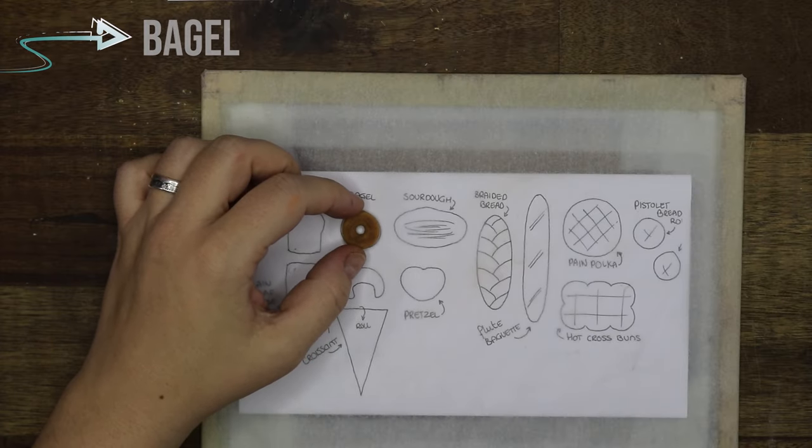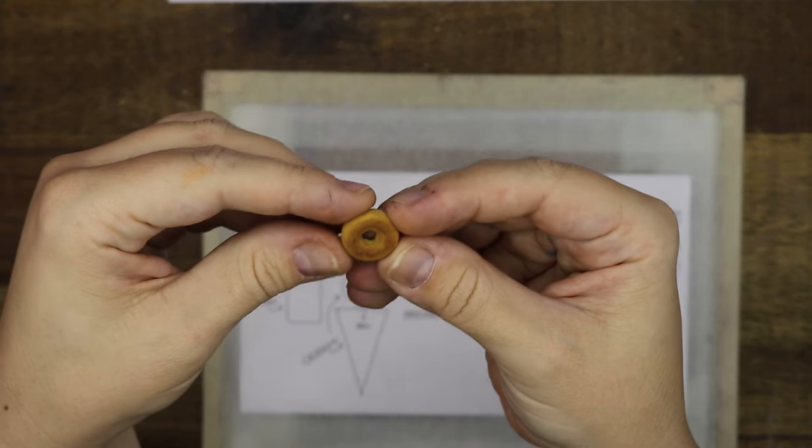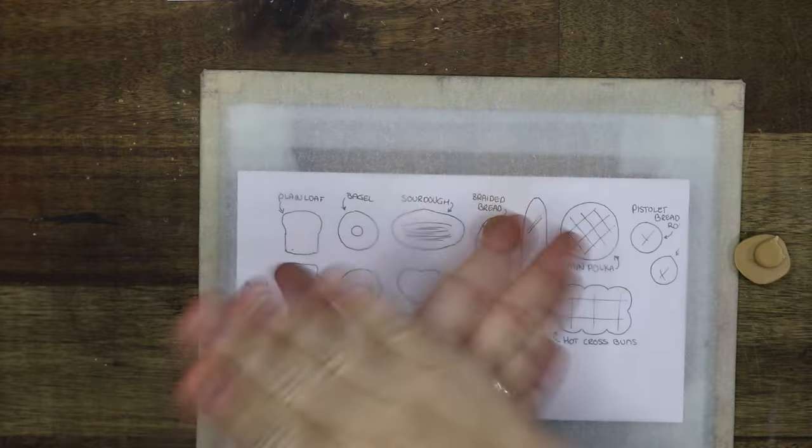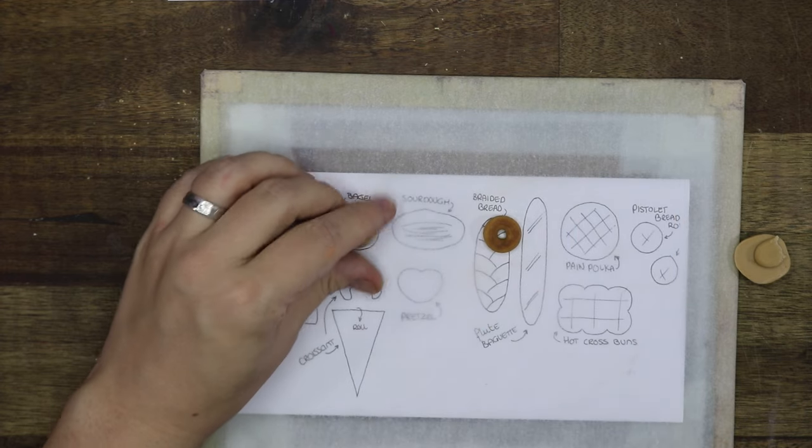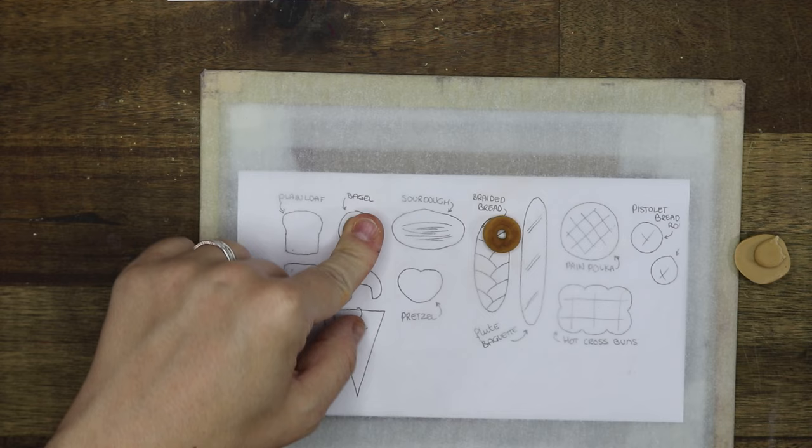Next we're going to be making a bagel, one of my favorite breads. Start by rolling a ball that is slightly smaller than the template, then flatten it slightly to make a round disc.